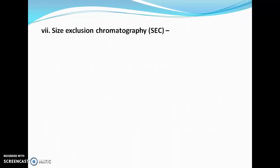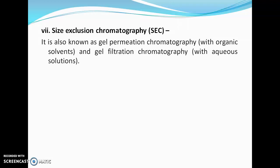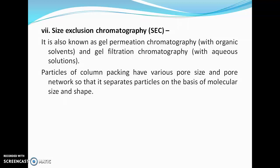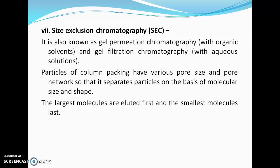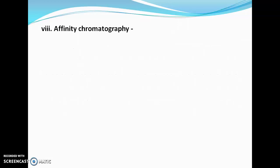Next is size exclusion chromatography, also known as gel permeation chromatography or gel filtration chromatography. The column packing particles have various pore sizes and pore networks so that they can separate particles of the sample on the basis of molecular size and shape. Gels are used as the stationary phase, acting as a molecular sieve. The largest molecules elute first while the smallest molecules elute last.